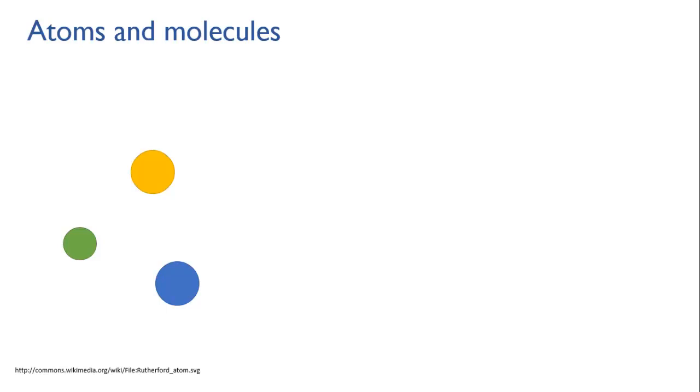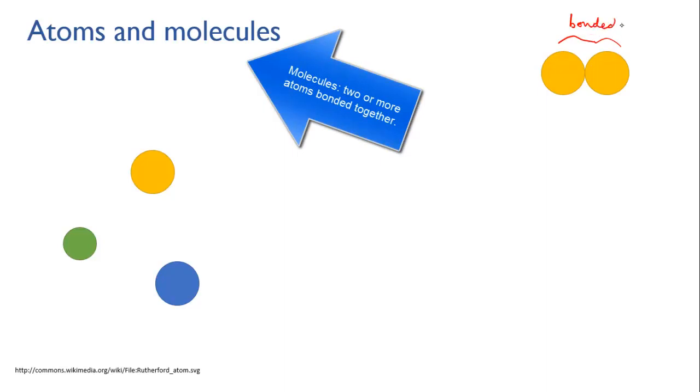If you start joining atoms together, chemists say the atoms are bonded together. If you join them together into groups, then those groups are called molecules. So a molecule is any group of two or more atoms that are bonded together. Some substances are made up of individual atoms, while others are made up of molecules.